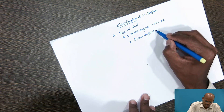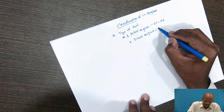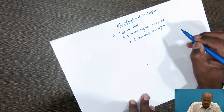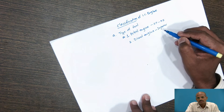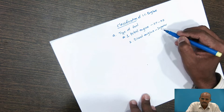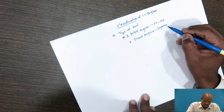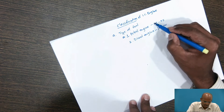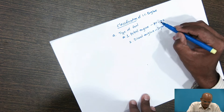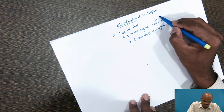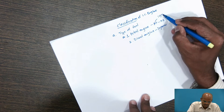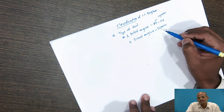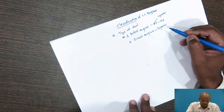For diesel engines, the injector is used. But remember, in BS6 norms, we are not going to use the spark plug now. These spark plugs are replaced with the injector to satisfy the BS6 norms.